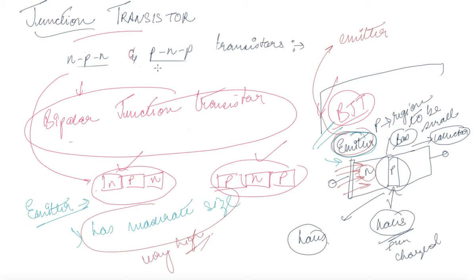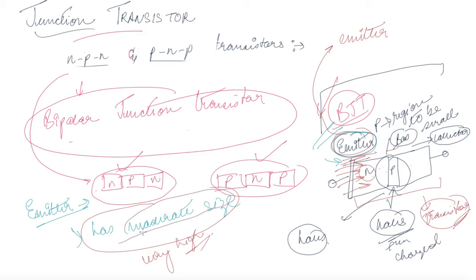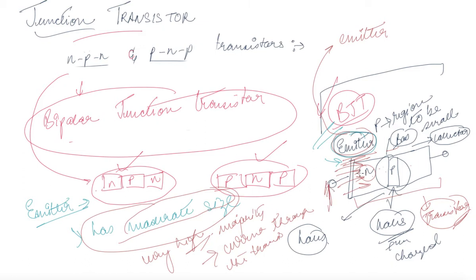Combining these three regions gives you the transistor — a combination of N-P-N junctions that performs a specific function. In a transistor you have an emitter, a base, and a collector. The emitter is moderate in size but heavily doped so that it acts as the majority carrier and can pass a large amount of current through the transistor.